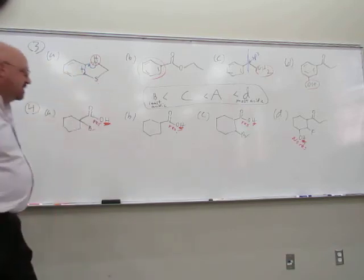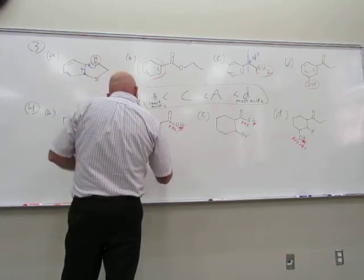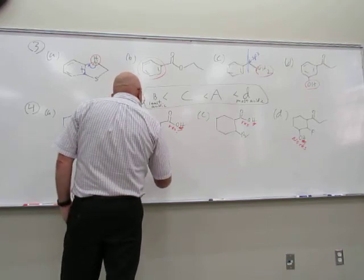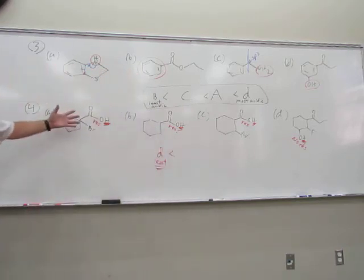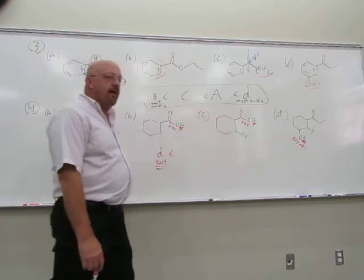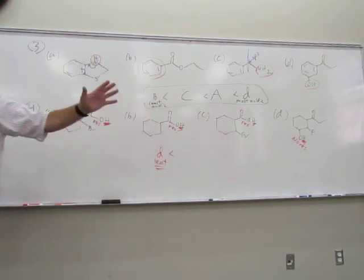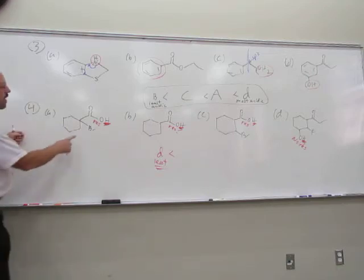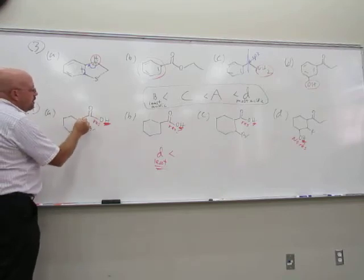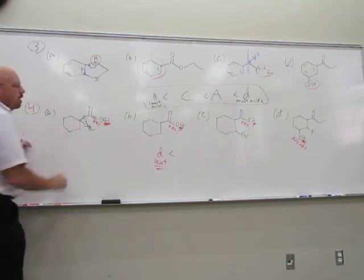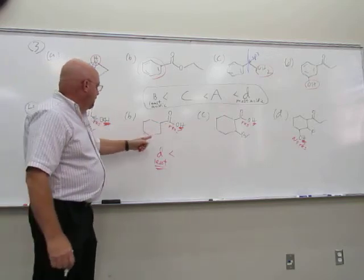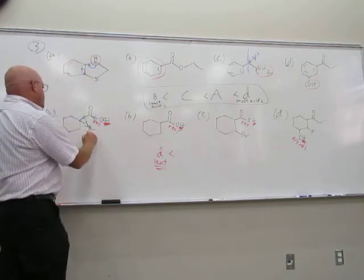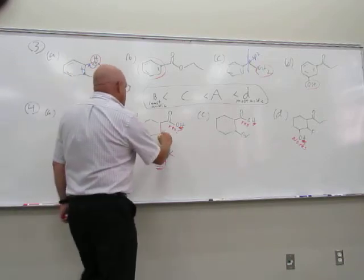So we've got one figured out. That last one — the alcohol — is the least acidic. Now the other three are all carboxylic acids. They all have resonance, so resonance is out the door now. What's left? The only thing left is inductive effect. This one has a bromine that can pull electrons away. This other one has no inductive effects. So one had inductive and the other did not.